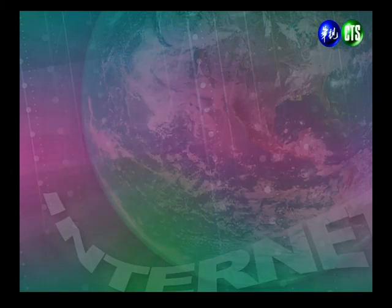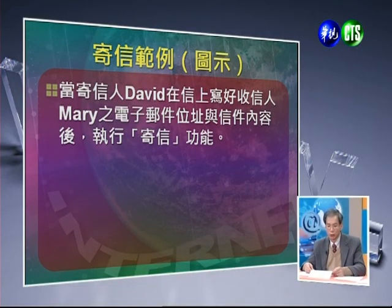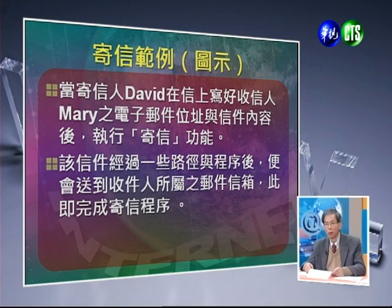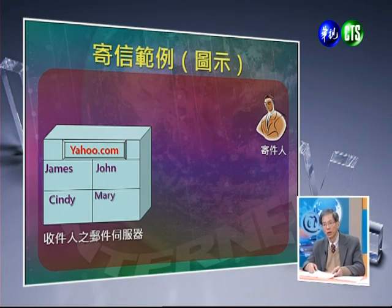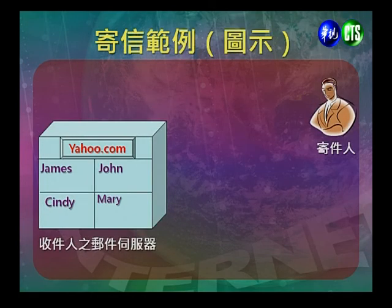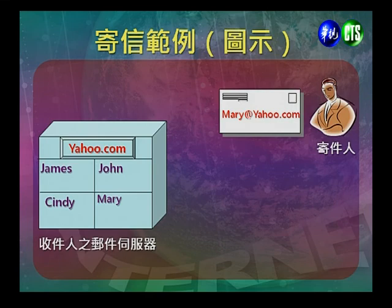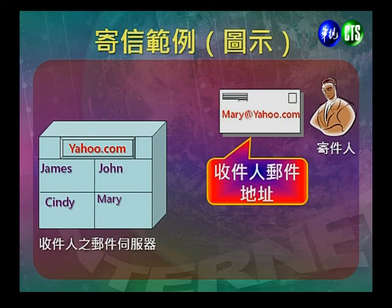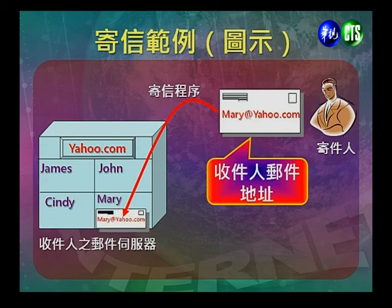邮件收发可以分成寄信以及收信两个程序。寄信就是将信件由寄件人的电脑传送到收件人的电子信箱。以范例来说明：寄信人David写好收信人Mary的电子邮件位置及信件内容，执行寄信功能之后，信件会经过一些路径与程序，传送到收件人所属的电子邮件信箱，完成寄信程序。